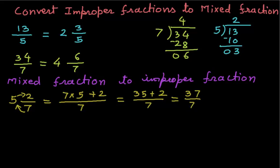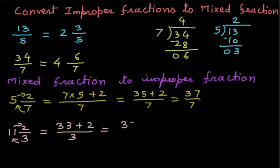Let me consider another example: 11 and 2 over 3. We will multiply 11 and 3, which is 33, and add 2 to it, keeping the denominator as it is. So 33 plus 2 is 35 over 3. This is the improper fraction.